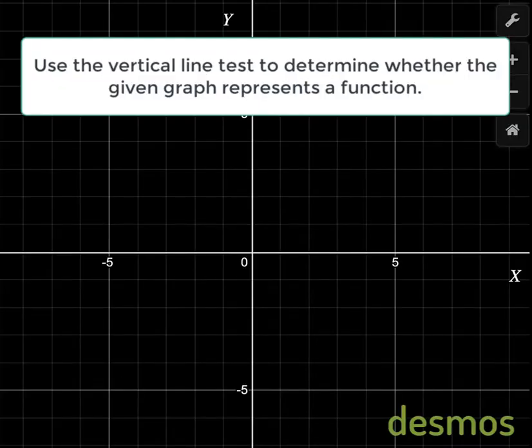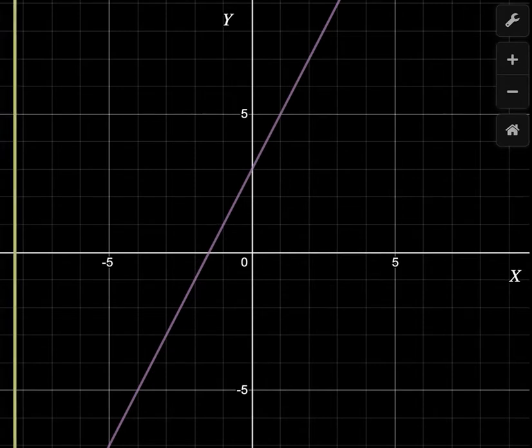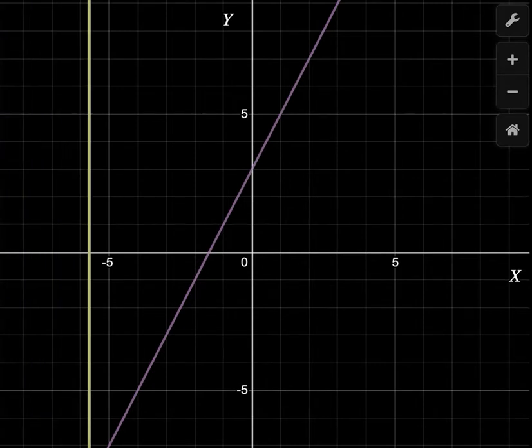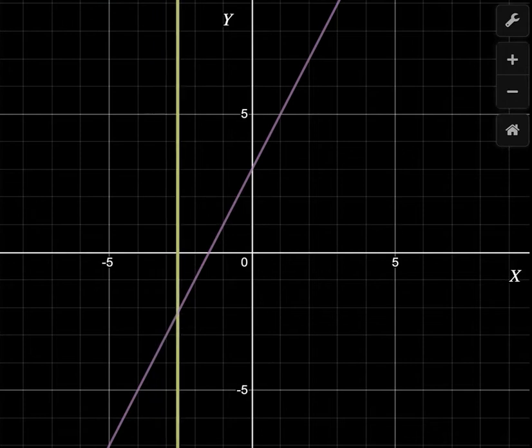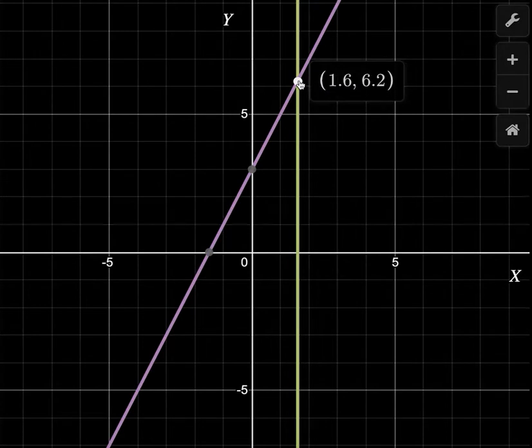The question is to use a vertical line test to determine whether the graph represents a function. I'm given this graph and I have a line here. The vertical line test is where you take a vertical line and drag it across the curve of the graph, looking at the intersection of the vertical line and the graph.